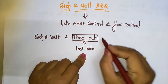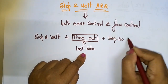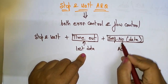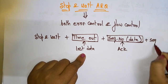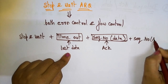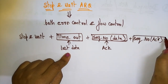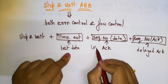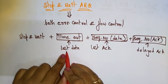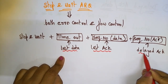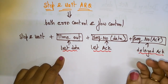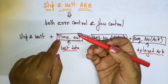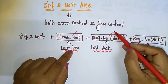We give a sequence number for the data so we know for which data we are receiving the acknowledgement. We also give a sequence number for the acknowledgement to overcome the delayed acknowledgement problem. So these three — lost data, lost acknowledgement, and delayed acknowledgement — are the problems of simple Stop-and-Wait, and Stop-and-Wait ARQ introduces timeout and sequence numbers to resolve them.